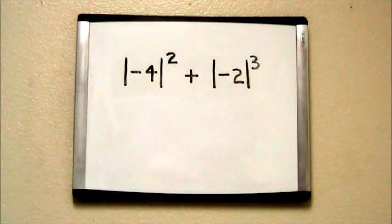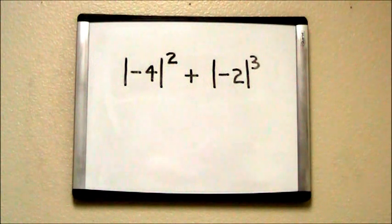So in our problem here, the absolute value of negative 4 squared plus the absolute value of negative 2 to the third power, we're first going to rewrite the numbers with the correct value.